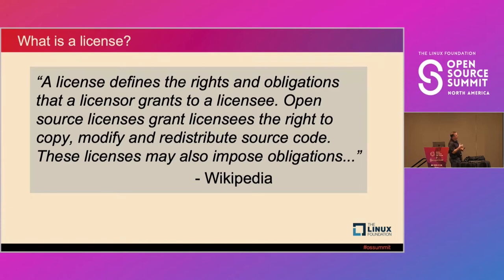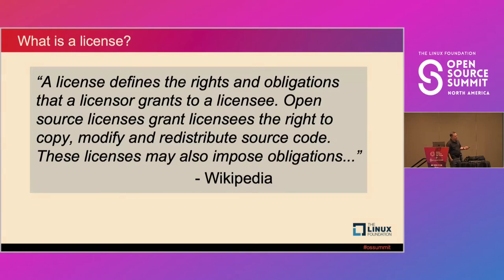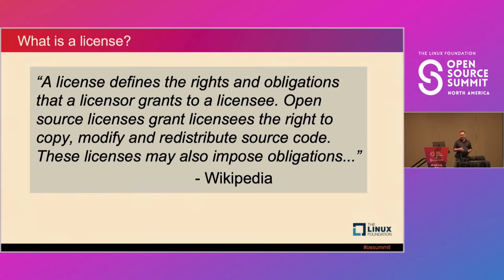Open source licenses grant licensees the right to copy, modify, and redistribute source code. These licenses may also impose obligations. The key terms here are: licensor — the person who authored or owns the code; licensee — the user of the code; copy, modify, and redistribute — terms common in most open source licenses; and 'may impose obligations' — these are requirements, the things that can get you into trouble if you don't follow them.